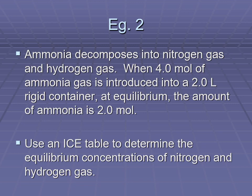Try it out once more. Ammonia decomposes into nitrogen gas and hydrogen gas — three species. Be sure to put numbers in moles per liter: if we have 4 moles in 2 liters, that's 2 moles per liter of ammonia. It will end with 2 moles in 2 liters, so 1 mole per liter at equilibrium. Let's put that into our ICE table.